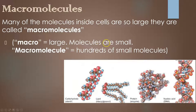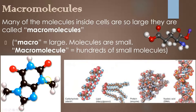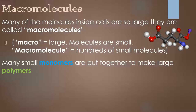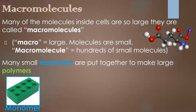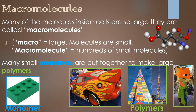Macro means large, but molecules are small. So macromolecules actually means hundreds or thousands of small molecules built up together. These massive structures are made up of small, repeating units. We call these small units monomers, and we put them together to make large things called polymers. The best way to think of this is like Legos — the monomer is the individual Lego brick, but you put those together and you can create all sorts of different structures. The individual unit is the monomer, and the repeating structures are the polymers. Mono means one, poly means many.